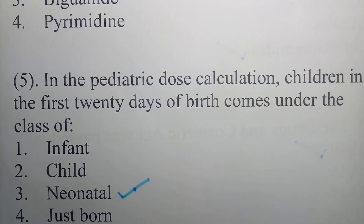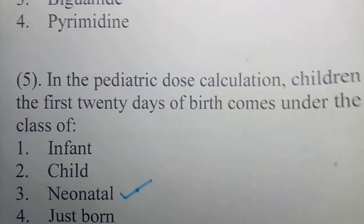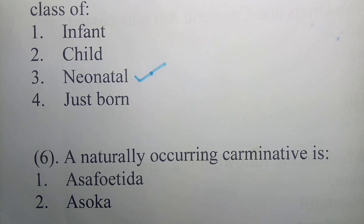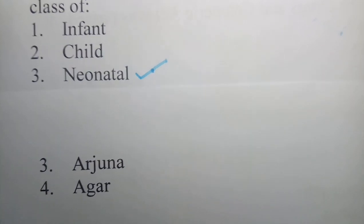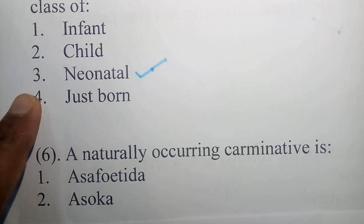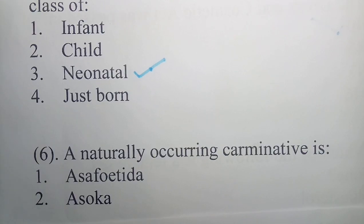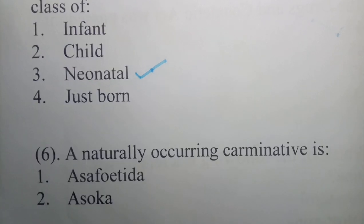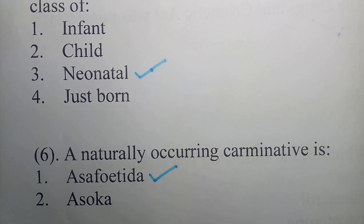Question 6: A naturally occurring carminative is - options are asafoetida, ashwagandha, arjuna, agar. The correct answer is option 1 - asafoetida. Asafoetida is a naturally occurring carminative.